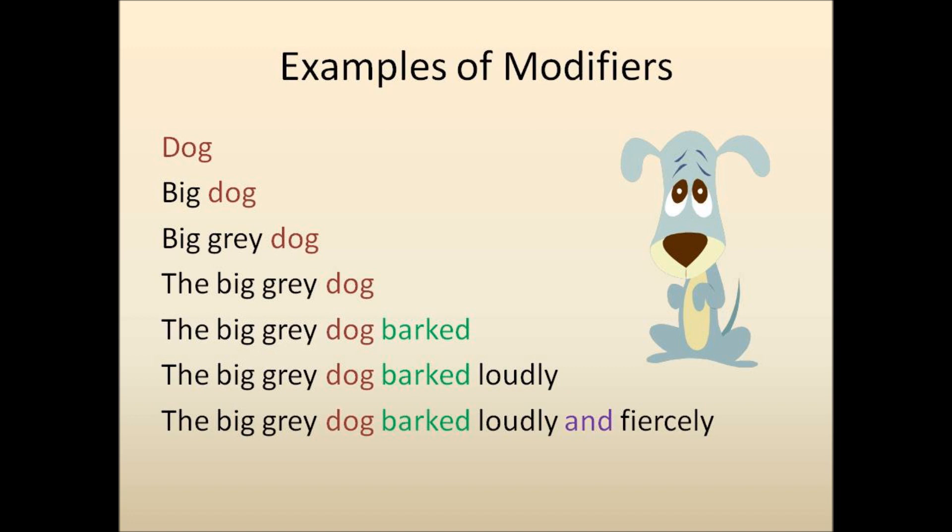Then the dog needs to do something in order to form a sentence. So let's have the dog bark, the big gray dog barked. Then we can actually modify how the dog barked by adding loudly and fiercely. So in the end, we can have the big gray dog barked loudly and fiercely.